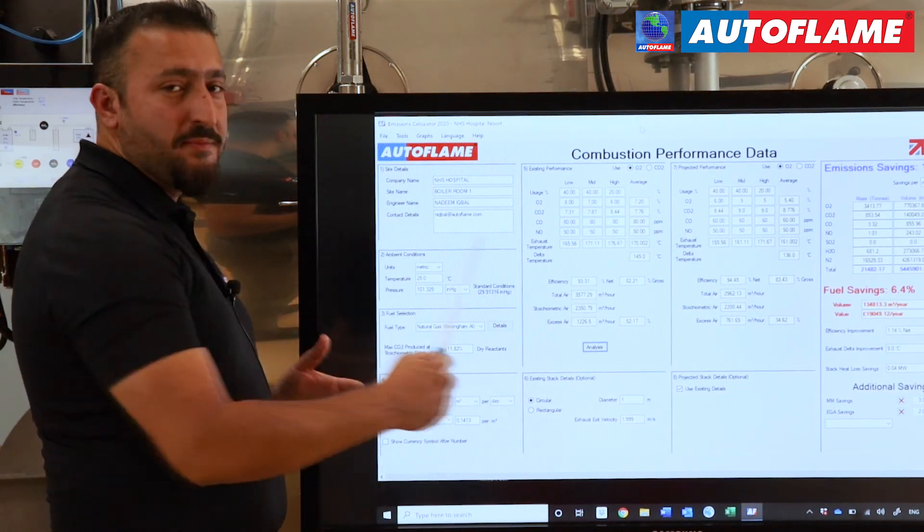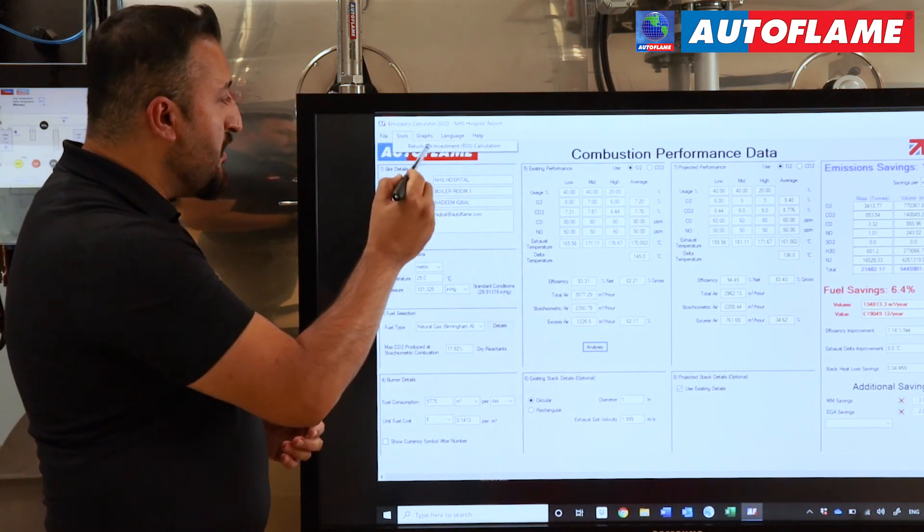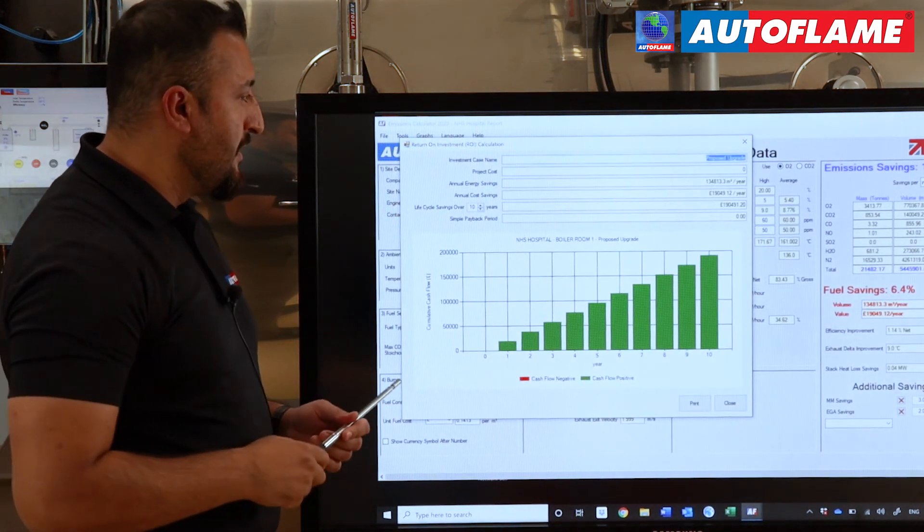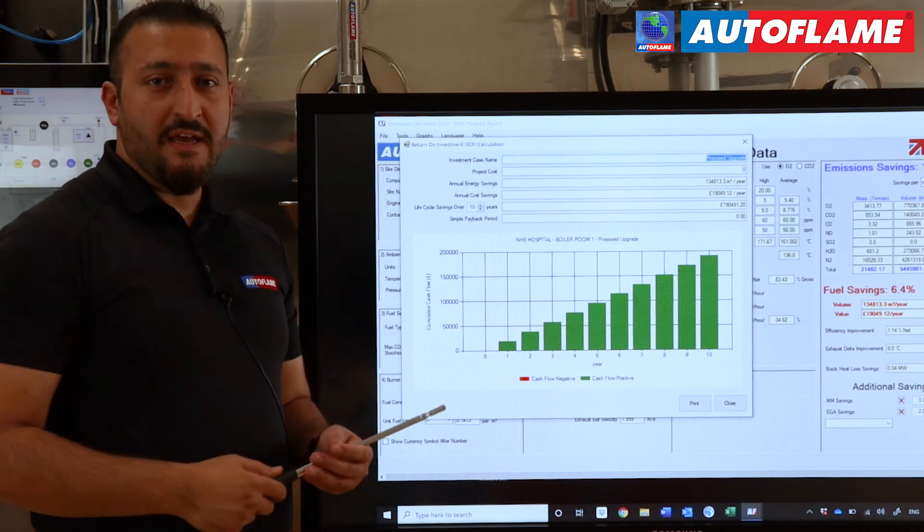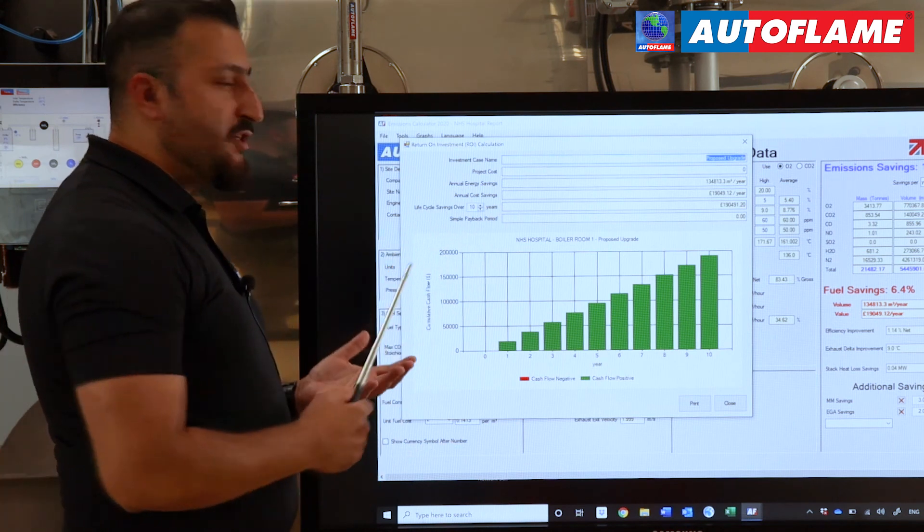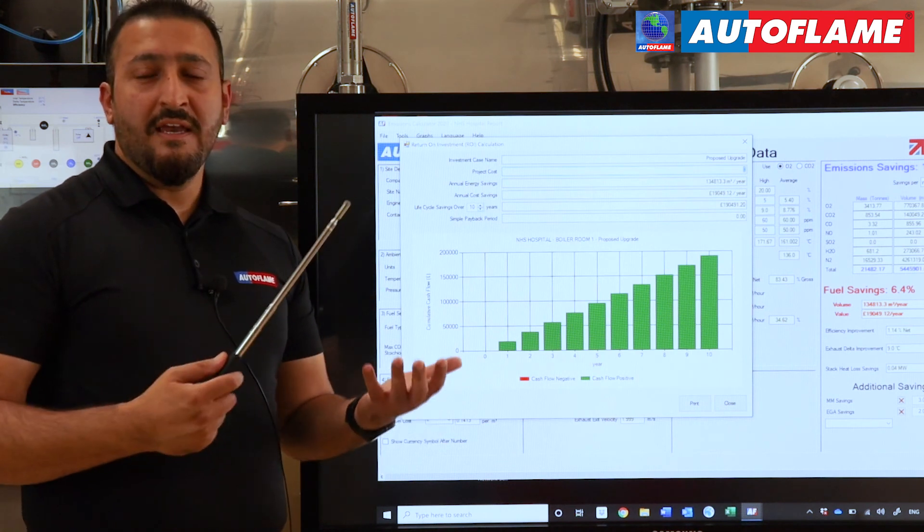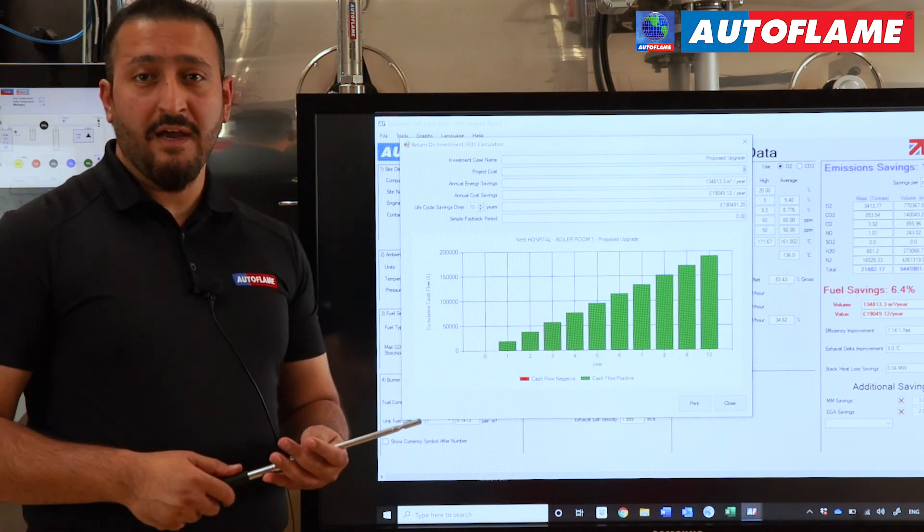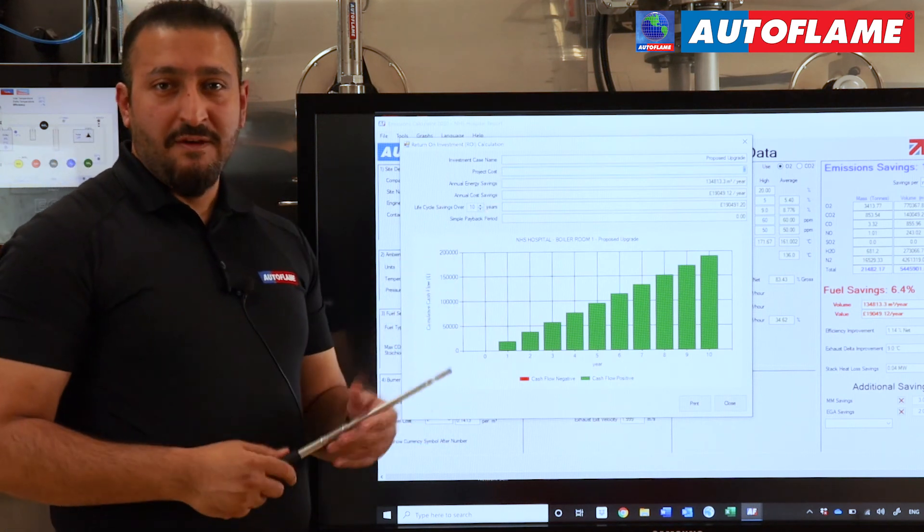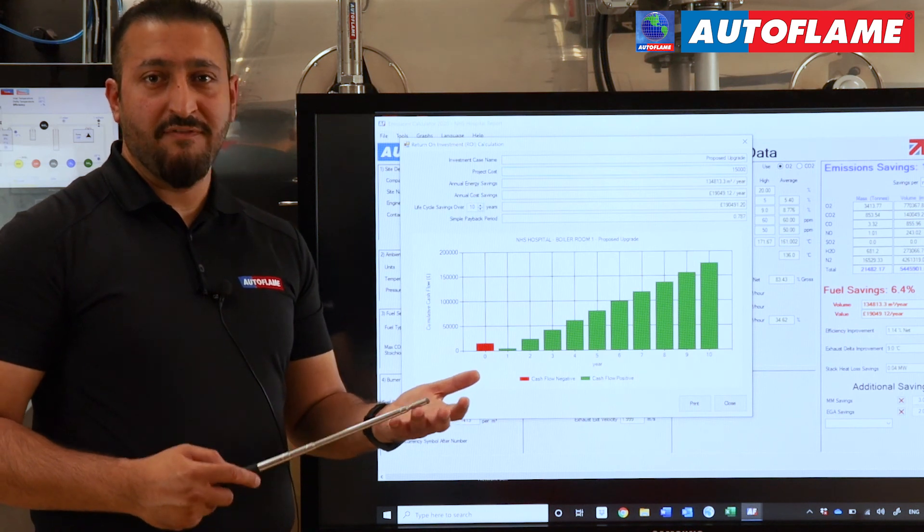Another feature that we have added into the emissions calculator is return on investment calculation. If we click on Tools and go to Return on Investment Calculation, for this particular project, because we are talking about only an upgrade - investment case name: proposed upgrade. Project cost - now this can be different based on where you're based, what the labor costs are, what are the custom clearance charges if they apply, shipping charges, etc. Based on that, the project costs can change. But for this particular example, let's say we're using £15,000 as the cost of labor, equipment, installation, and final commissioning.